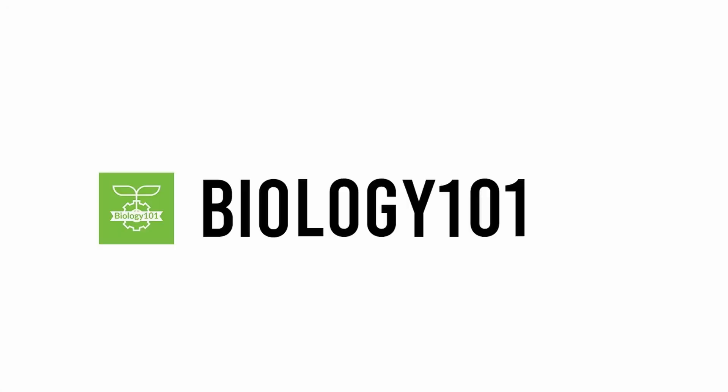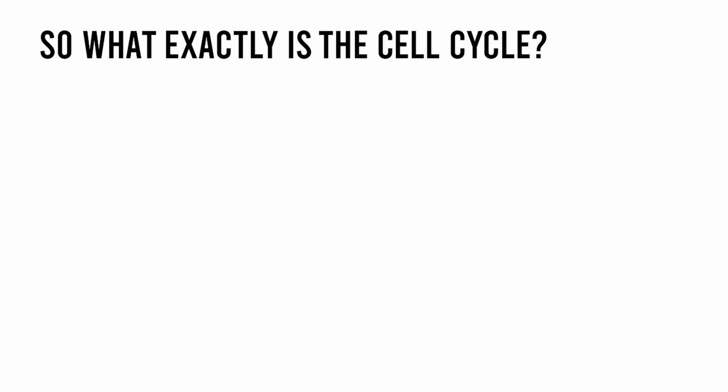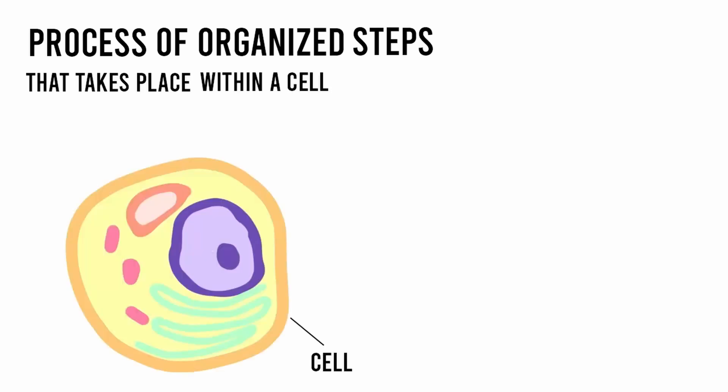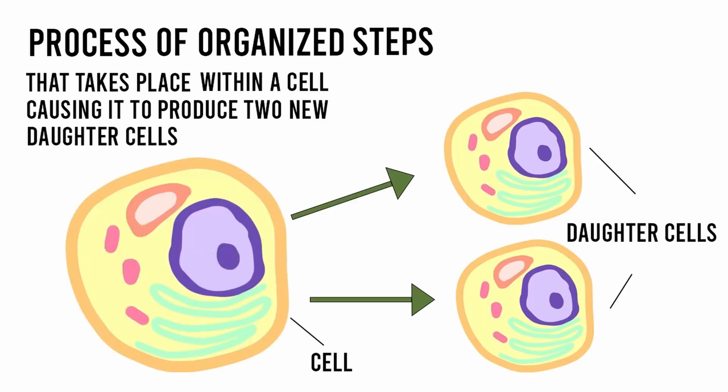Hello, and welcome back to Biology 101. In this video, we will be talking about the cell cycle. The cell cycle is a process of organized steps that takes place within a cell, causing it to produce two new daughter cells.